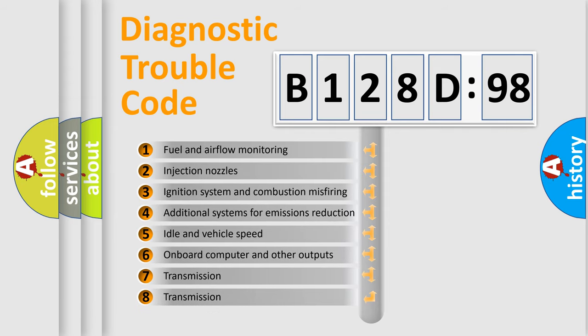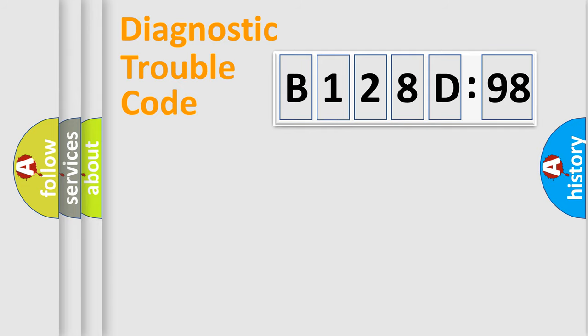The third character specifies a subset of errors. The distribution shown is valid only for the standardized DTC code. Only the last two characters define the specific fault of the group.